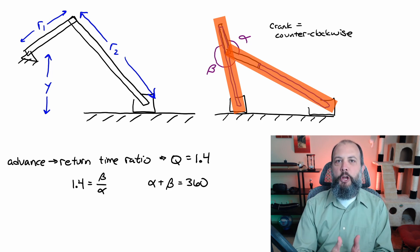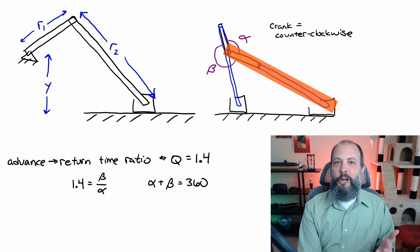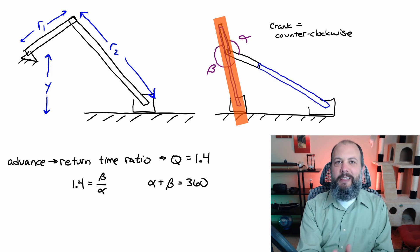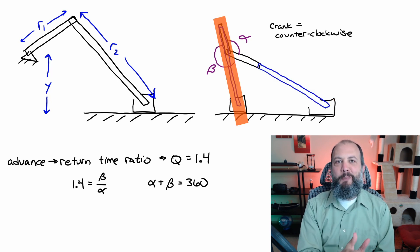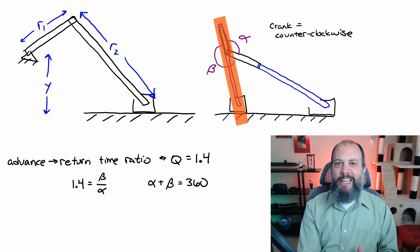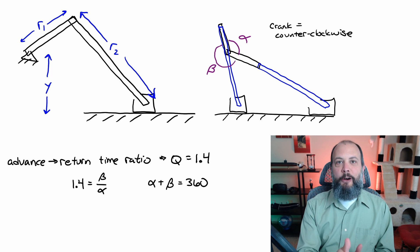For a crank rotating counterclockwise this drawing shows the two toggle positions and these toggle positions will occur when the coupler and the crank are perfectly aligned. The end of the push stroke and start of the return stroke occur when the crank and coupler are in their fully extended position, and then on this drawing when the crank is pointed up and to the left you see the end of the return stroke start of the push stroke happens again when the crank and coupler are aligned, but this time the coupler is overlapping the crank.